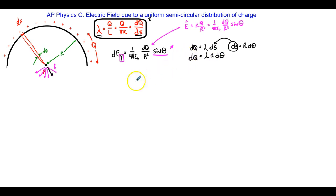So that's going to get substituted in, and the next thing I get is the differential of the electric field in the Y component is equal to 1 over 4 pi epsilon naught times dQ, which I'm now substituting for. That's going to be equal to lambda R d theta over R squared. And the sine theta piece is still here.